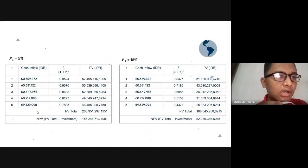Based on the data, for P1 equal to 5%, we get the calculation on the table. PV total equals 260,951,297, and NPV equals 155,244,713,195.